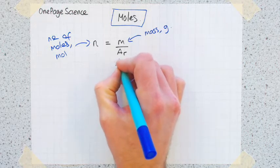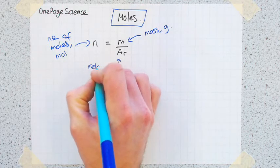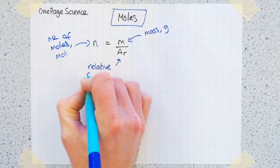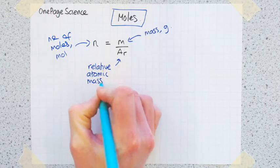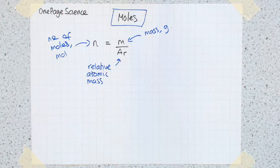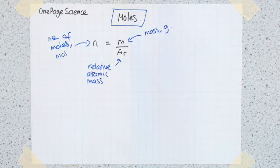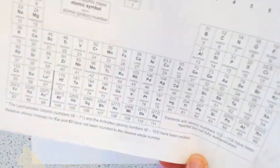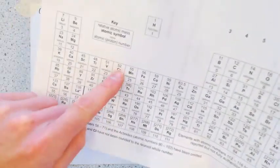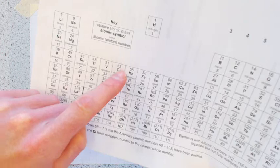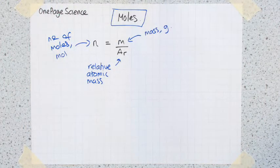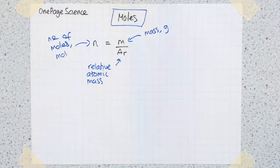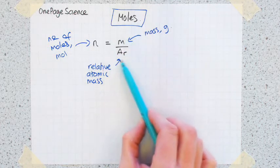And Ar is the relative atomic mass. That's what you find if you look it up in the periodic table. I'll show you an example of an AQA one here. In AQA it's the top number each time. The top number is the relative atomic mass.